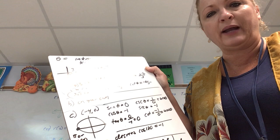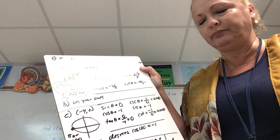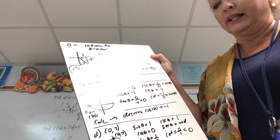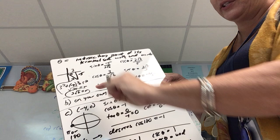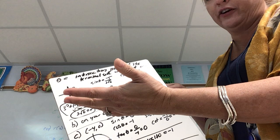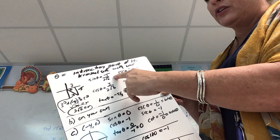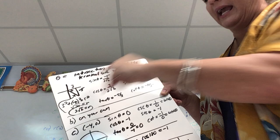I'd like you to stop the video and do part b — set up all six trig ratios. Now let's look at part c. Take out your calculator. Remember you can put the calculator in degrees or radians, and use the inverse trig functions to find the actual angle.